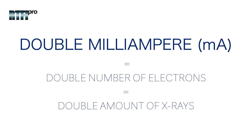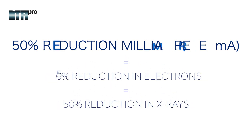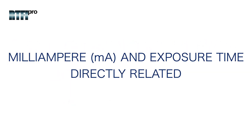As a result, if the milliampere is doubled, it will double the number of electrons and therefore double the amount of x-rays produced. If the milliampere is reduced to 50% of the original MA, it will reduce the number of electrons traveling to the anode target by 50% and in turn reduce the amount of x-rays produced by 50%. As mentioned, milliampere and exposure time are directly related.